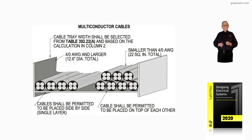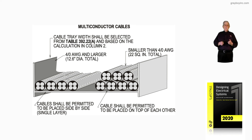So now, based upon larger than #4 or smaller than #4 conductors, we will go to the next illustration and see how the cable tray is selected.